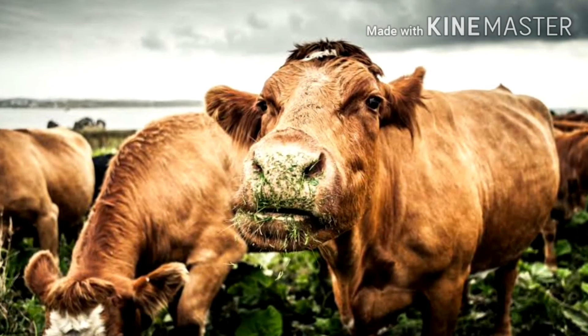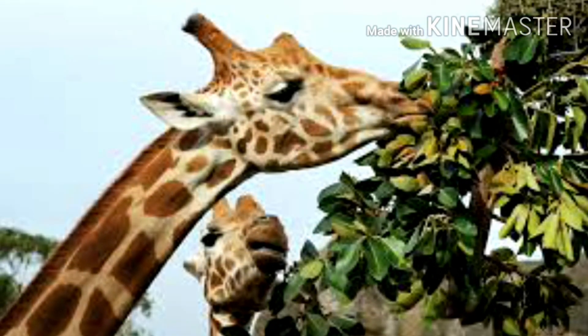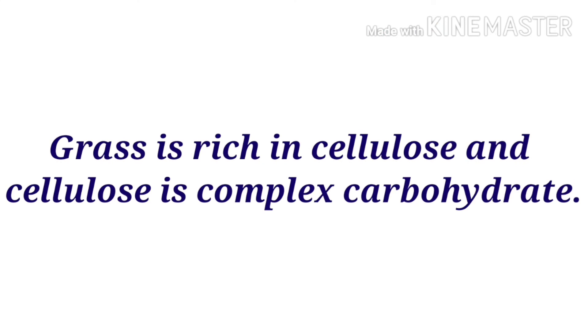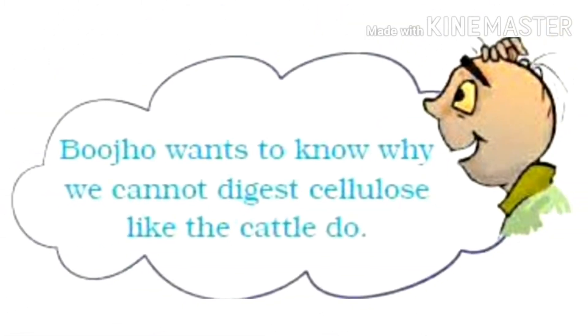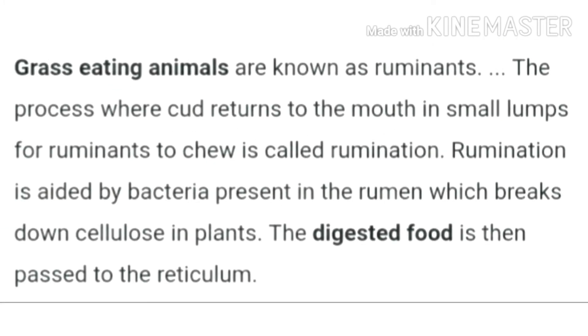The animals masticate the cud in their leisure time and then finally re-swallow it. Then it goes into the rest of the digestive system. These animals mainly eat green grass, plants, or plant products, and grass is rich in cellulose. Cellulose is a complex carbohydrate.